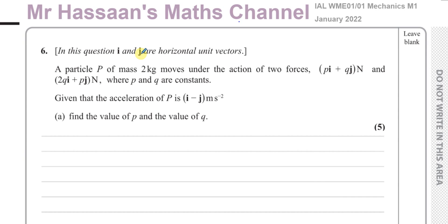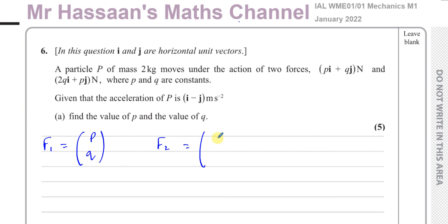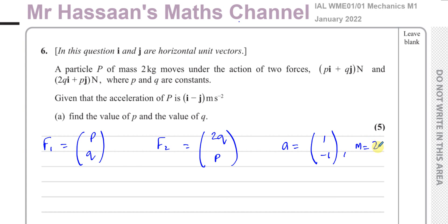In this question, i and j are horizontal unit vectors. A particle P of mass two kilograms moves under the constant action of two forces: F1, which is pi + qj, and F2, which is 2qi + pj, where p and q are constants. Given that the acceleration is i minus j — that is, 1i minus 1j metres per second squared — find the value of p and the value of q.